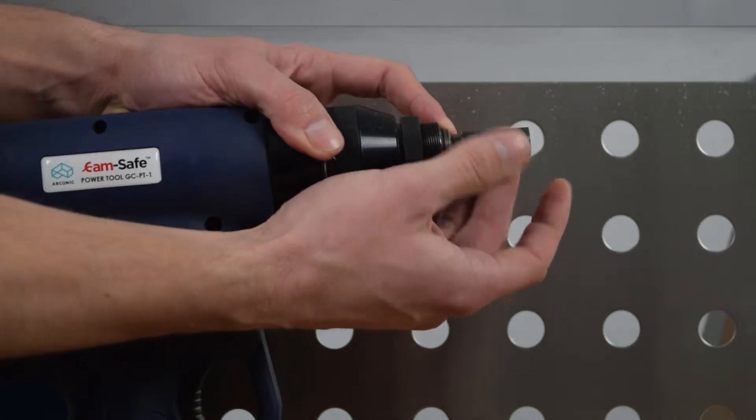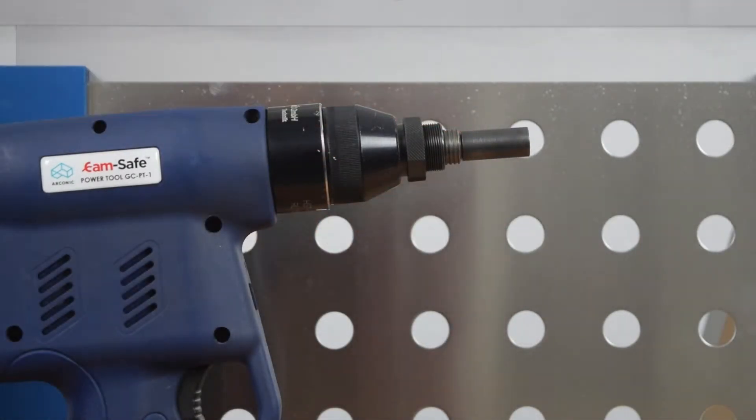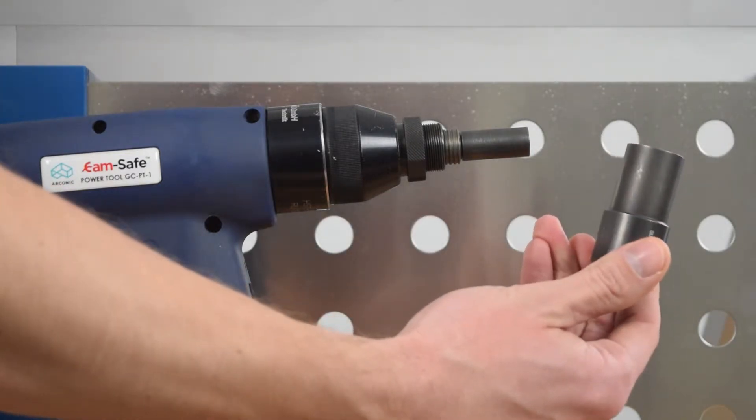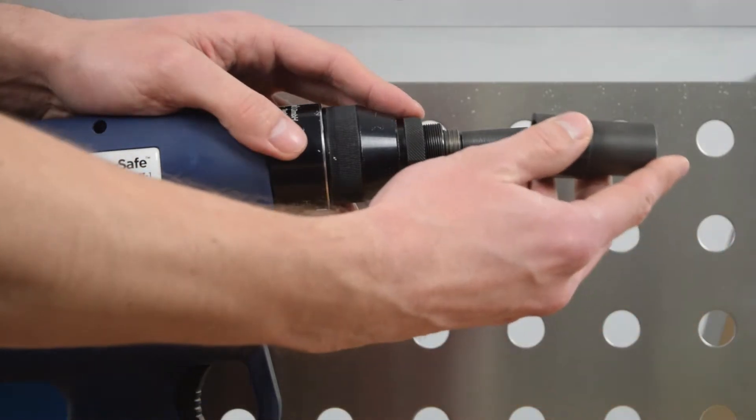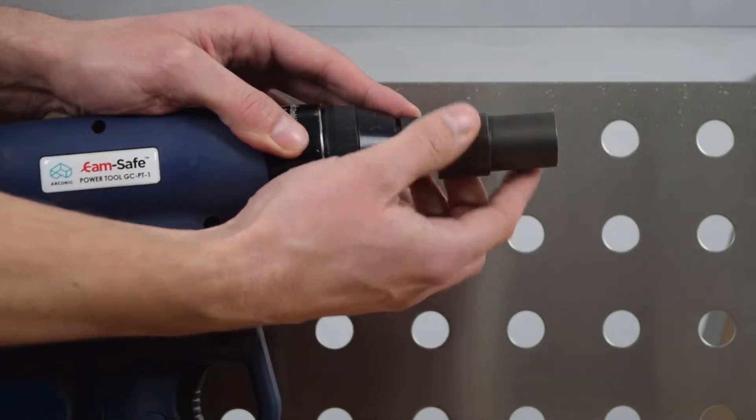Make sure that the driving sleeve is placed over the hexagon of the mandrel. Then screw on the driver until it's flush with the counter nut of the power tool.